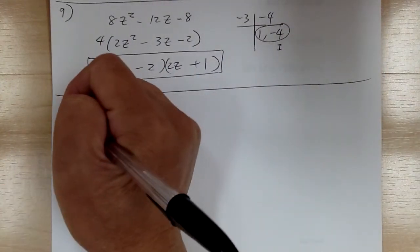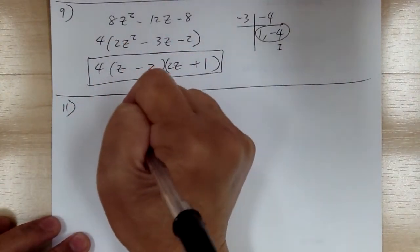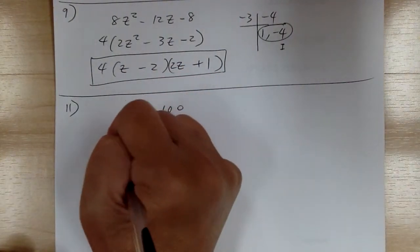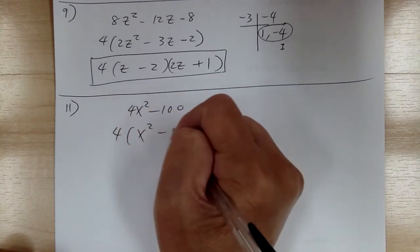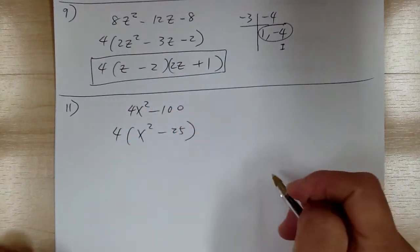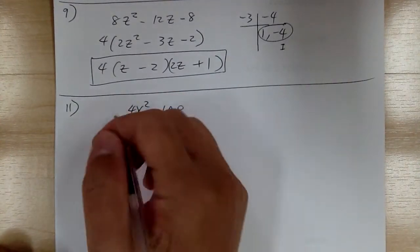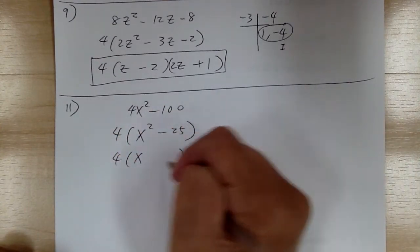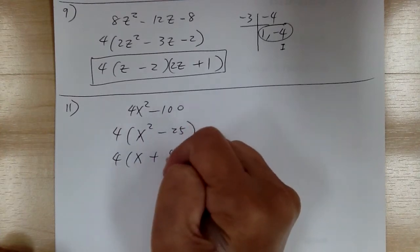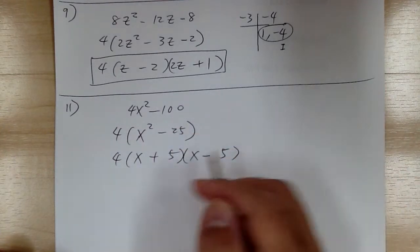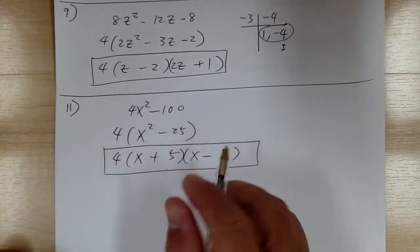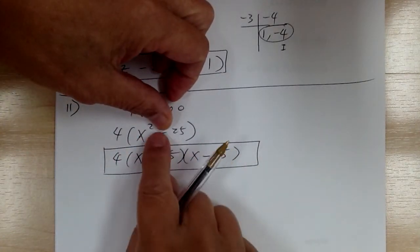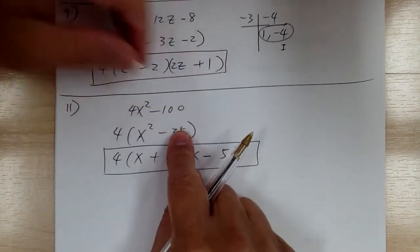Number 11. You have 4x squared minus 100. Step 1, common factor. Factor out the 4, so you get x squared minus 25. Then step 2, this is the difference of squares. Get your two sets of parentheses: x, x, plus, minus, 5, 5. x times x gives you x squared, plus times minus gives you minus, 5 times 5 gives you 25.